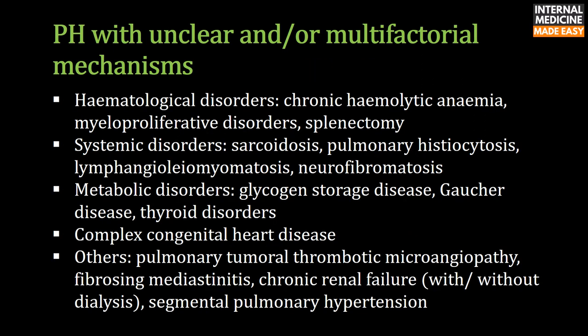Pulmonary hypertension with unclear and/or multifactorial mechanisms: hematological disorders include chronic hemolytic anemia, myeloproliferative disorders, and splenectomy. Systemic disorders include sarcoidosis, pulmonary histiocytosis, lymphangioleiomyomatosis, and neurofibromatosis. Metabolic disorders include glycogen storage disease, Gaucher disease, thyroid disorders, and complex congenital heart disease. Others include pulmonary tumoral thrombotic microangiopathy, fibrosing mediastinitis, chronic renal failure, and segmental pulmonary hypertension.